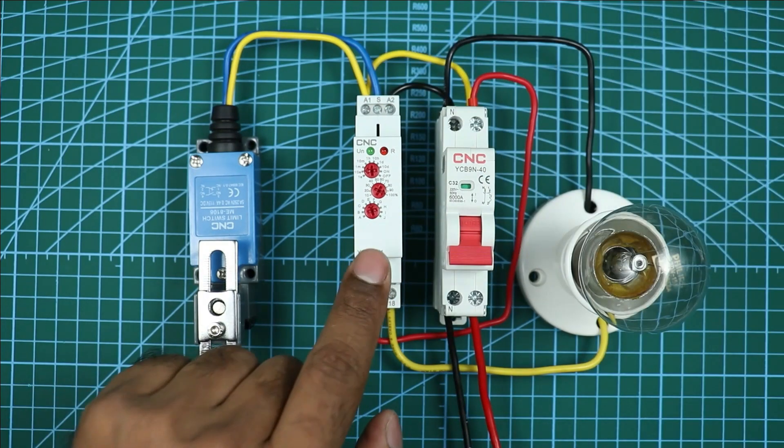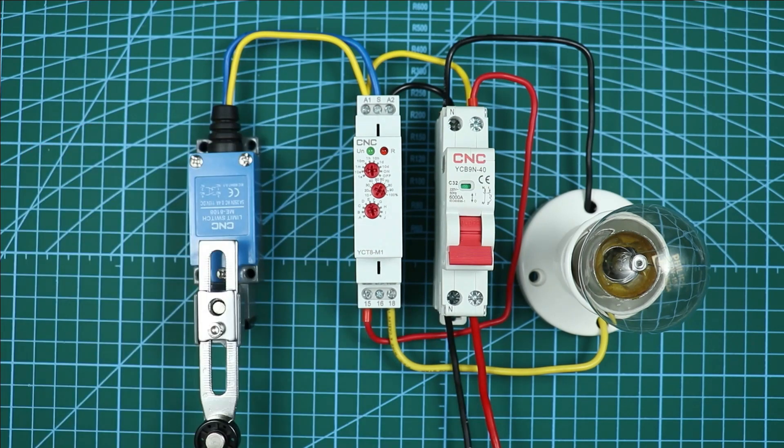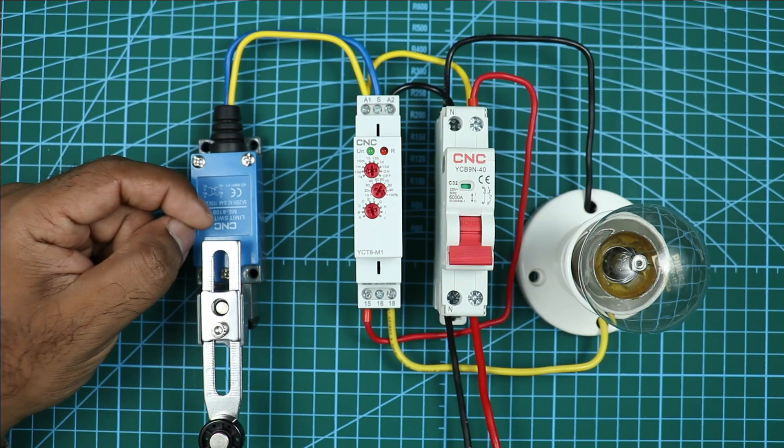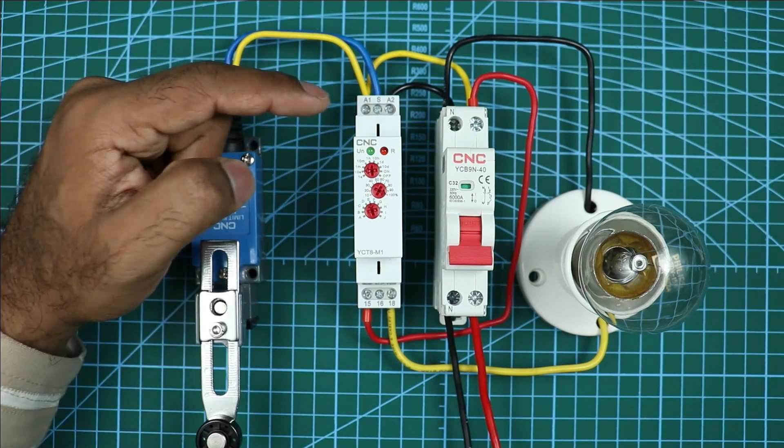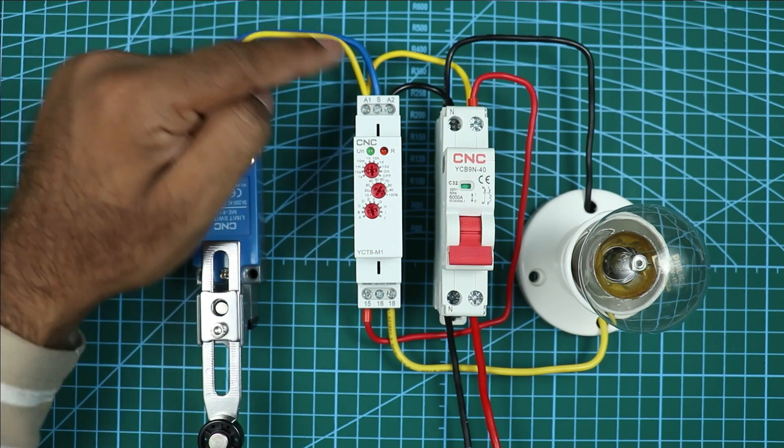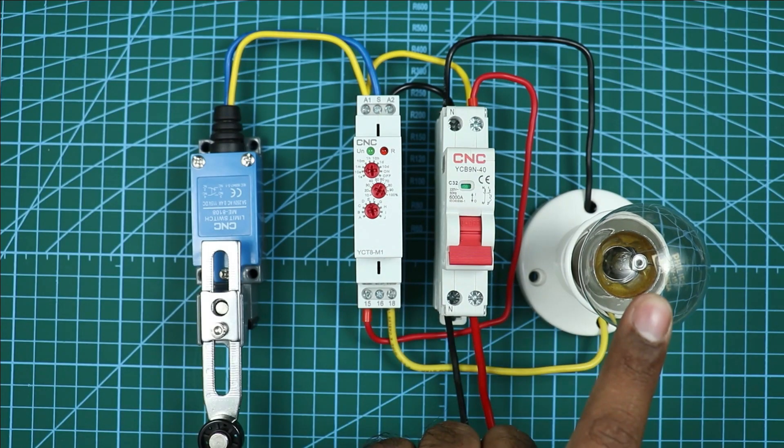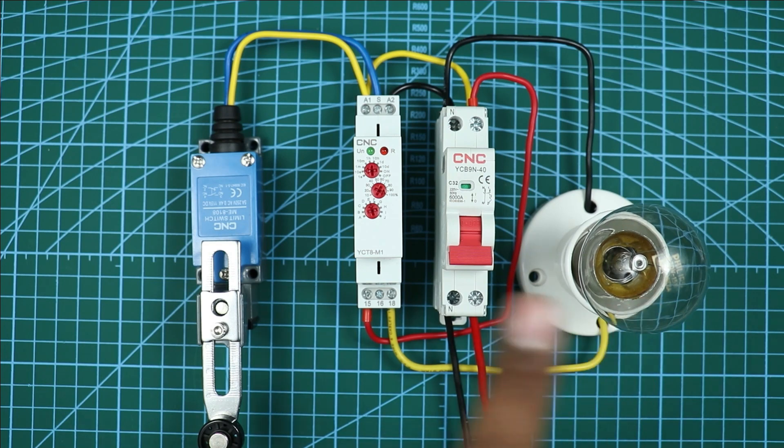To operate this timer, you have to also provide pulse signal. To provide pulse signal, I am using this limit switch. The limit switch has two wires - one of them is connected at A1 terminal and another wire is connected at S terminal. After this, at NO contact of timer, I connected this lamp so that lamp can be operated through this timer.